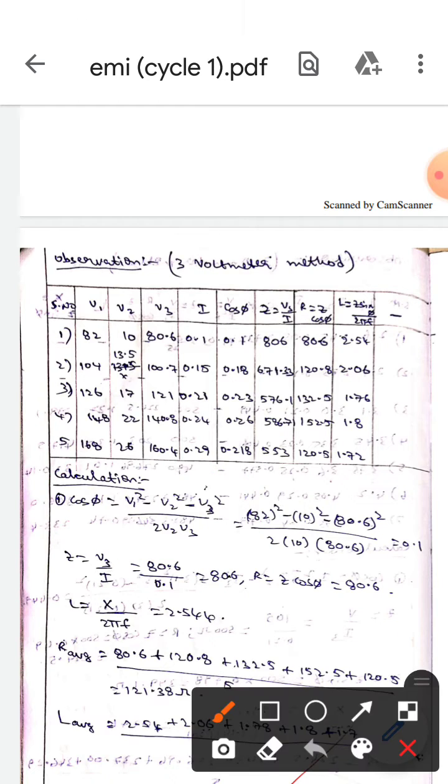Whereas for finding the Z value we use the formula Z equals V3 by I.